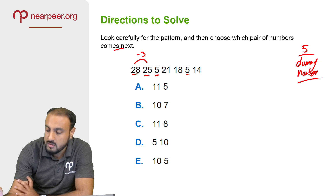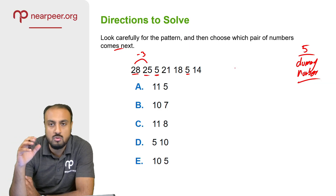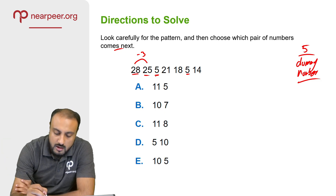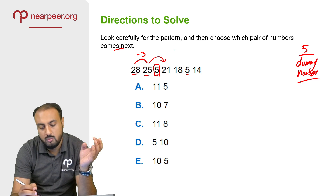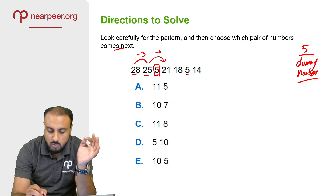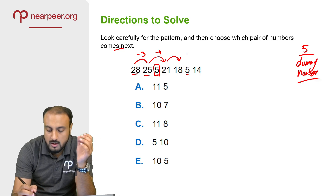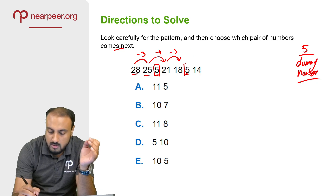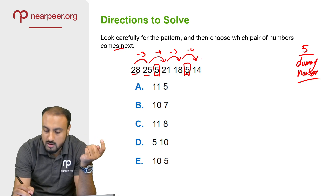There is a dummy number — a number that has no relationship with the pattern; it is there only to confuse us. We ignore the dummy number. Then we look at 25 and 21. From 21 to 25 is plus 4. Then again we see 21 plus 3, and then 21 plus 4, which means there is a minus 4 difference. Then again the difference is minus 4.